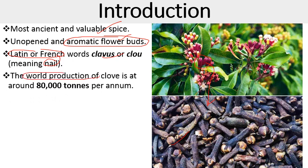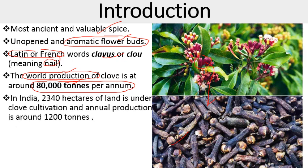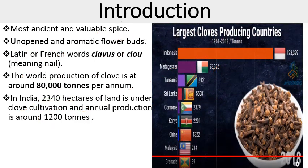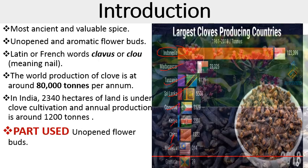The major clove-producing countries in the world are Indonesia, Sri Lanka, Madagascar, and India also produces considerable amounts. In India, clove is cultivated in states like Kerala, Karnataka, Tamil Nadu, and Andaman and Nicobar Islands. India has approximately 2,340 hectares under clove cultivation with an annual production of around 1,200 tons per annum. The image shows world production status: the largest producer is Indonesia, followed by Madagascar, Tanzania, Sri Lanka, Comoros, Kenya, China, and Malaysia. The part used is the unopened floral buds.